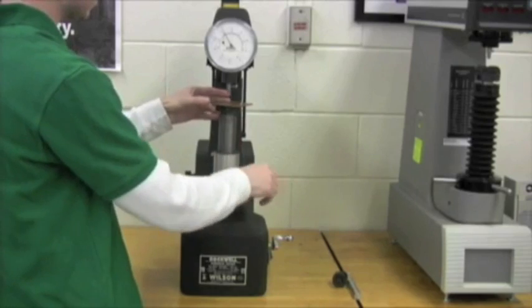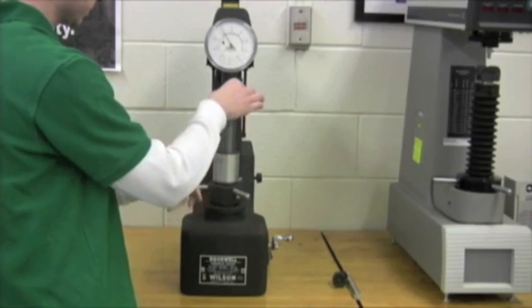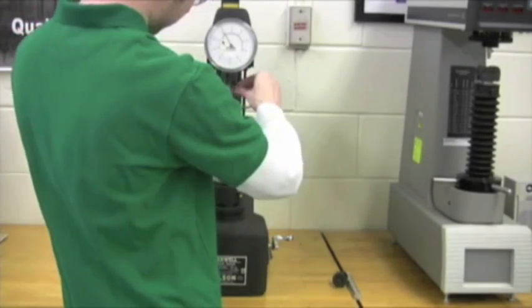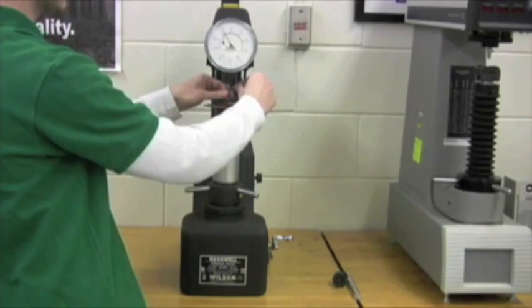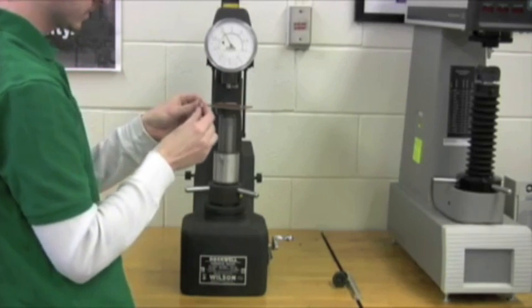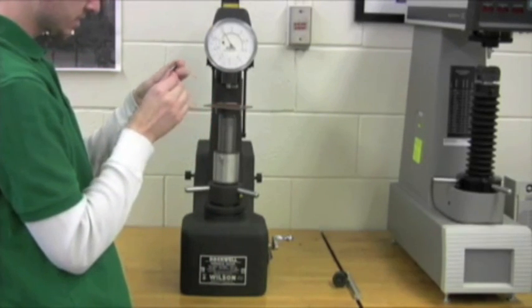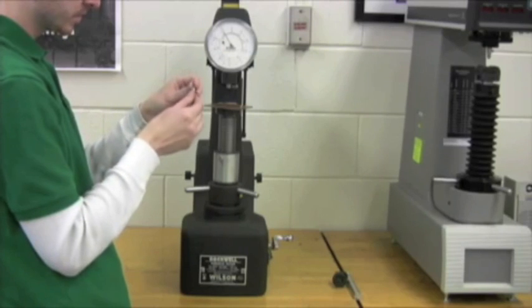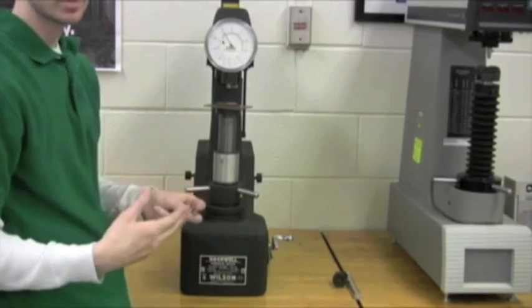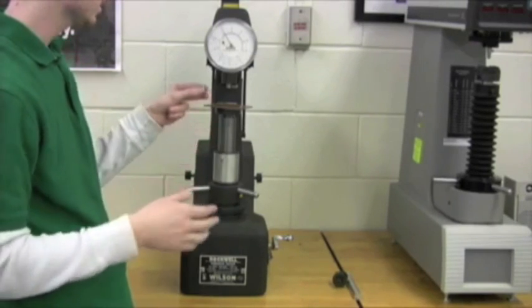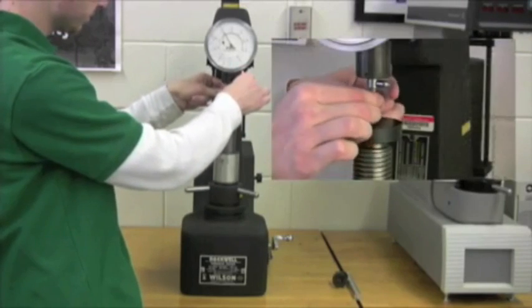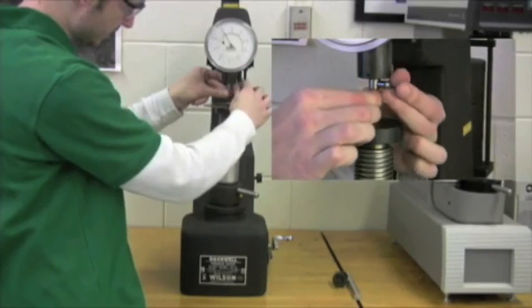I also want to talk about our penetrator. Penetrator is what is actually indenting the piece of material. This is our C penetrator, C Brale. And there's a couple different other ones for the type of material that you're going to need. But for this, we're going to be using the C Brale. And we just go to tighten it up.